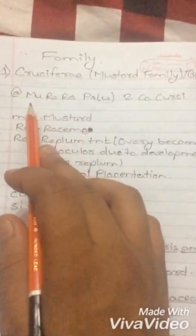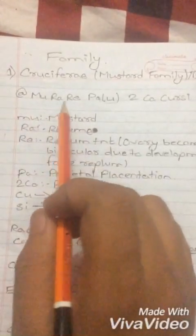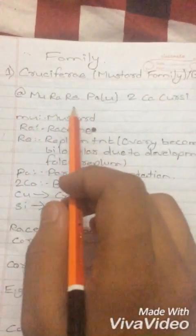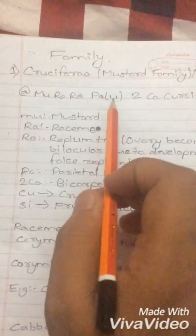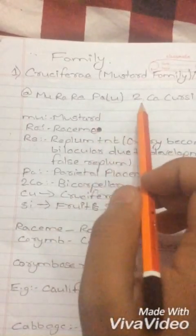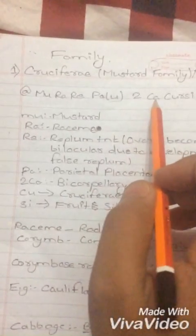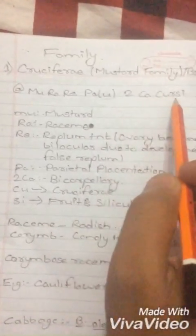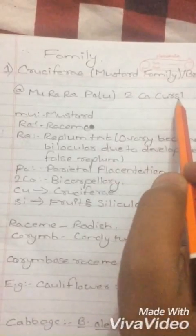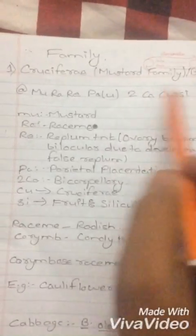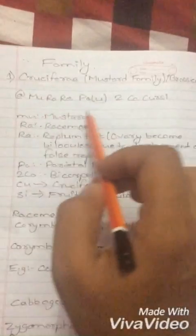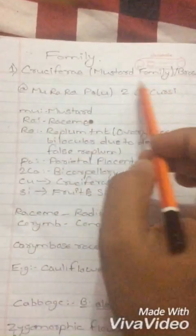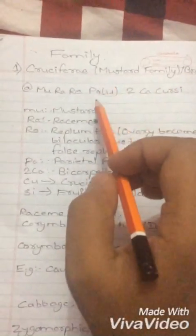The formula is simply MURARIPA TUKAKURSI: MU represents mustard, RA represents racemose, RE represents false replum, PA represents parietal placentation, 2CA represents bicarpellary, and SI represents the fruit is silicula. If you remember this, you can build your explanation of the family easily.